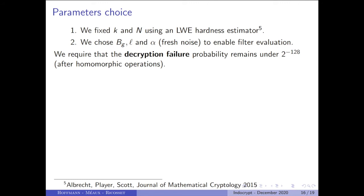Since we know the functions to be homomorphically evaluated, we chose parameters for the homomorphic scheme. Parameters must fulfill two requirements: first, they must grant 128-bit security, evaluated using an LWE hardness estimator; second, they must guarantee correct evaluation of the filter, meaning noise does not overflow during homomorphic operations. We require that at any time, the probability of encryption failure for a ciphertext remains below 2^{-128}. If this requirement is violated, it can lead to attacks. With these constraints, we built a noise evolution model and obtained two sets of parameters.